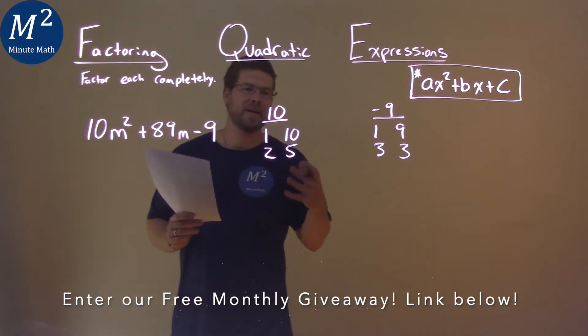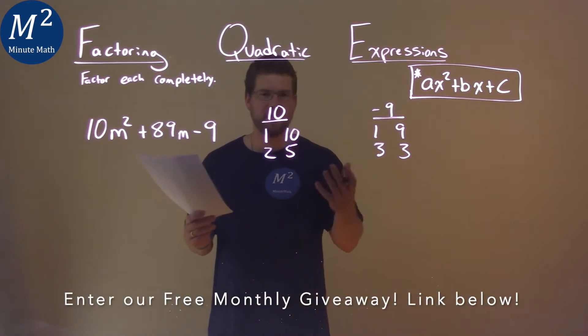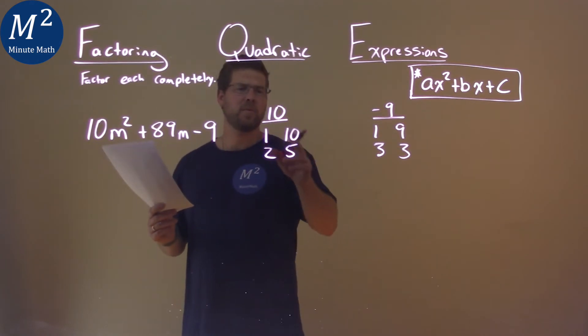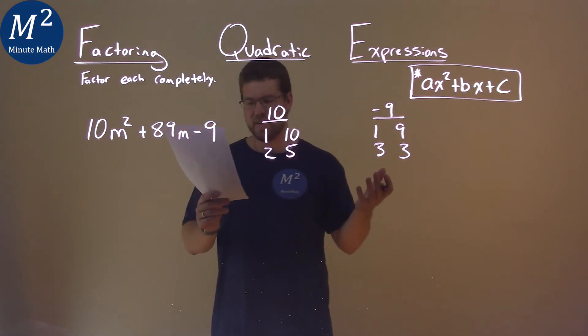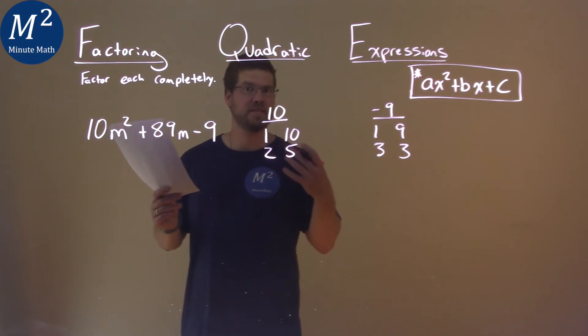So when I test this out, I try to make an educated test here and think about which ones multiply getting close to 89. That's 10 times 9, right? 10 times 9 is really close to 89, it's 90.